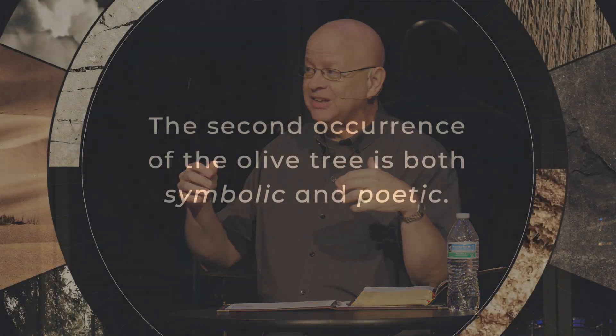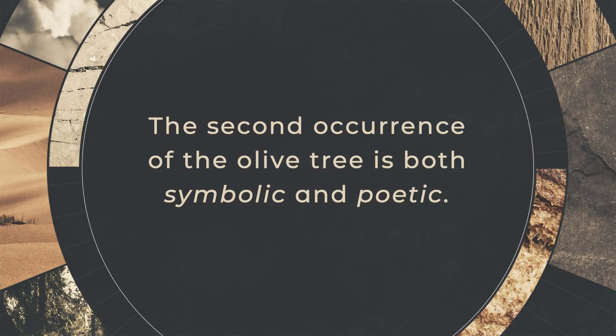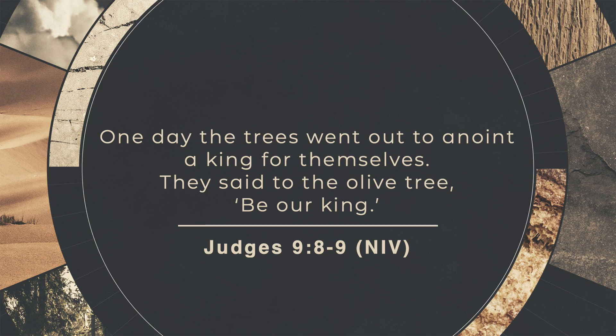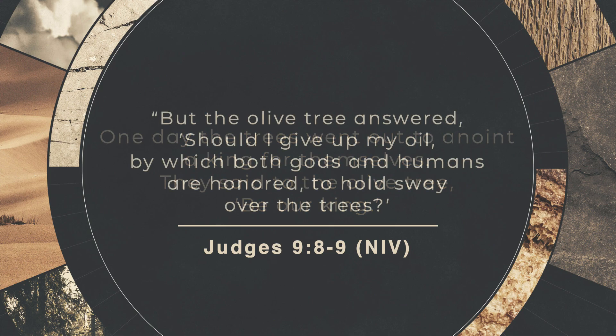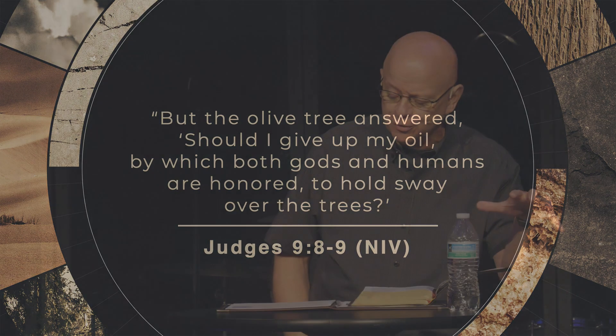The second occurrence of the olive tree is both symbolic and poetic. The olive tree picks up the idea of being kingly. The people of Israel were not satisfied with God being their only ruler, and they actually begged for a human king. In Judges chapter 9, verses 8 and 9, it says, 'One day the trees went out to anoint a king for themselves. They said to the olive tree, Be our king. But the olive tree answered, Should I give up my oil, by which both gods and humans are honored, to hold sway over trees?' It's a very strange and veiled reference.